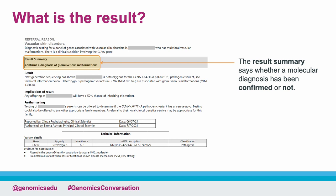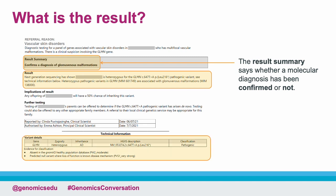Below the result summary, there is more detail about the result, including any variants identified and evidence for their classification. These three sections provide information about the result in varying degrees of detail.